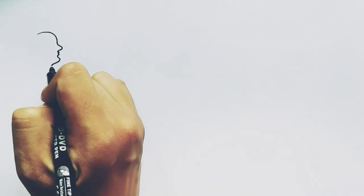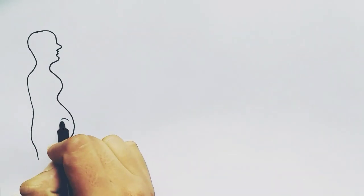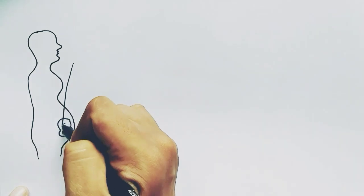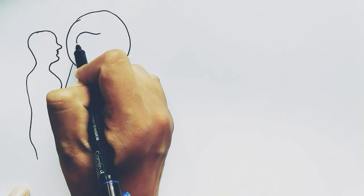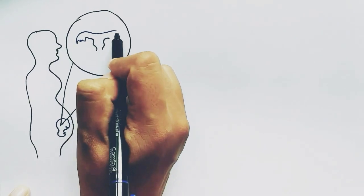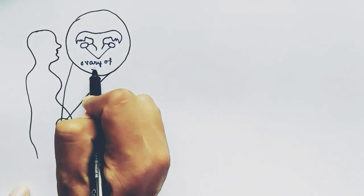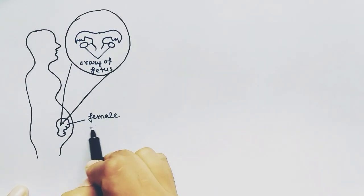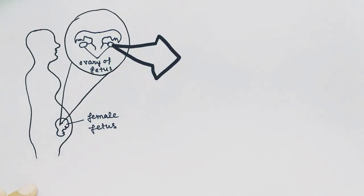In this video we're going to talk about oogenesis, that is the formation of ovum or female gamete. This is a pregnant woman; in her womb is a female fetus. Oogenesis starts in the ovary of the fetus when it is in the womb of the mother. Now zooming into the female reproductive system of the fetus.